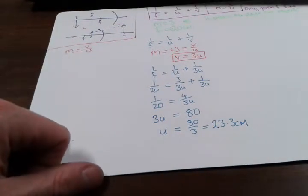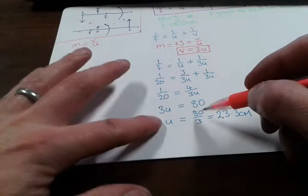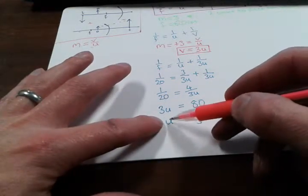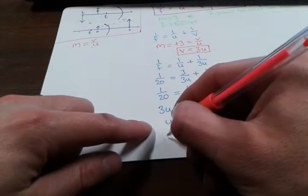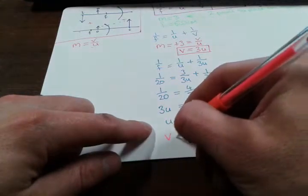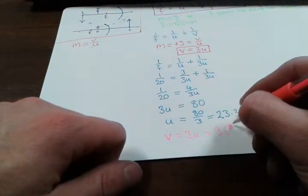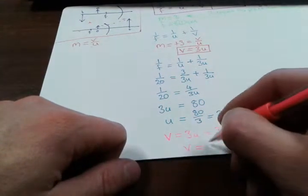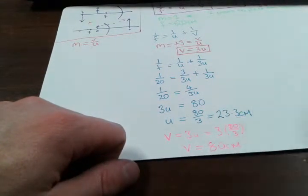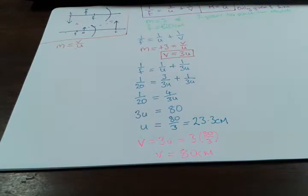Now that we have U, we can find V. Substituting back into V equals 3U: V equals 3 times 80 over 3, which gives 80 centimetres. So for the real image case, we get a real image at 80 centimetres.